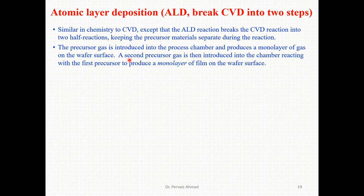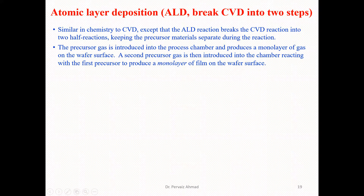During the ALD technique, the precursor gas is introduced into the process chamber and produces a monolayer of gas on the wafer surface. A second precursor is then introduced into the chamber, reacting with the first precursor to produce a monolayer of film on the wafer surface. We utilize two precursors: first we introduce one precursor in the chamber which produces a layer on the surface, then we introduce the second precursor gas which reacts with the first and produces a monolayer of film.